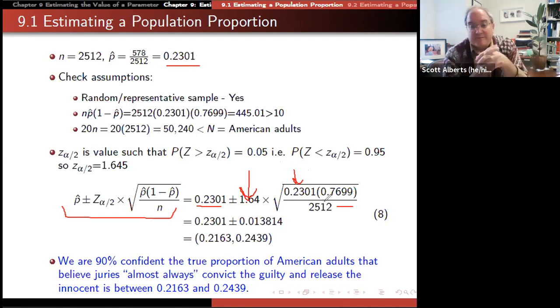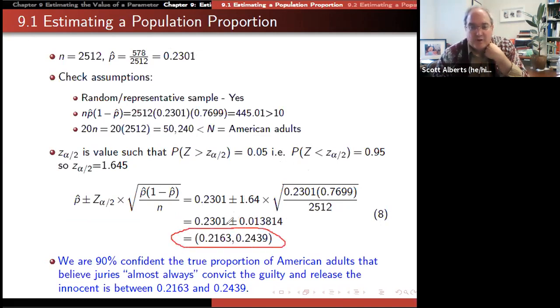She's going to use that number here in our calculation. And then it just becomes number crunching. Here it is in formula notation. Plug the numbers in. 0.2301 is our p-hat from up here. 1.645 is our Z alpha over 2. We're going to take the square root of our proportion 0.2301 times 1 minus 0.2301, which is 0.7699 divided by our sample size. Then arithmetic, calculator, calculator, calculator. And we get the value of 0.2301 plus or minus 0.0138.